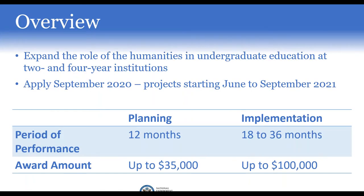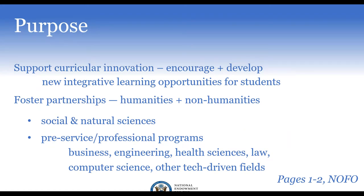Humanities Connections supports projects that will expand the role of the humanities in undergraduate education at two-year and four-year institutions. Applications for this current cycle are due at the end of September 2020, for projects starting as early as June 1, 2021, and no later than September 1, 2021. Planning-level projects last one year with a budget up to $35,000; implementation-level projects last 18 months to three years with a budget up to $100,000.